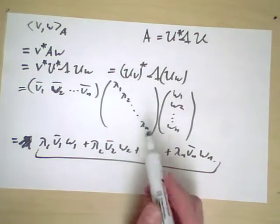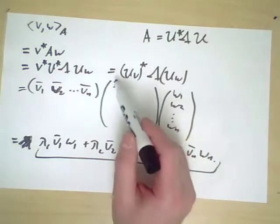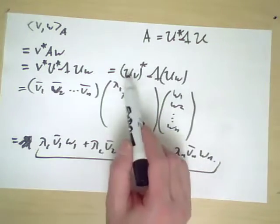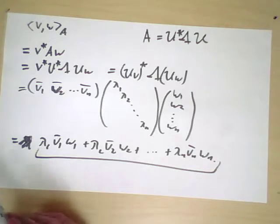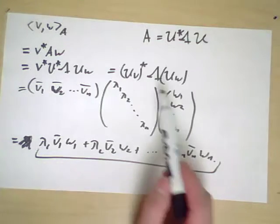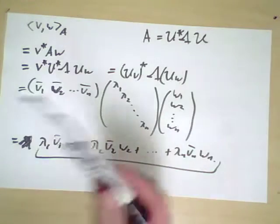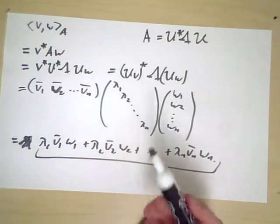In other words, if we choose all the lambdas to be one and have U be the standard orthogonal basis, then this is the standard inner product. However, if I choose some other lambdas and some other orthogonal basis, I get another notion of an inner product.